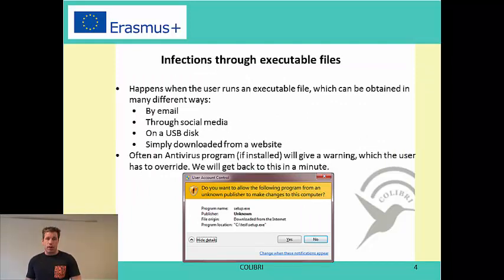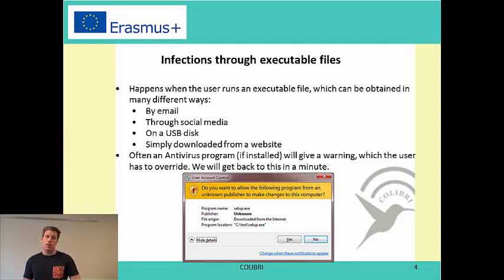You can also have infections through executable files. When a user runs an executable file, a piece of malware is installed on their computer. There are different ways this happens: by email, where you receive a message from someone you know or don't know with an executable file attached; through social media like Facebook, where friends or friends of friends ask you to open a file; from a USB disk; or by simply downloading it from a website.